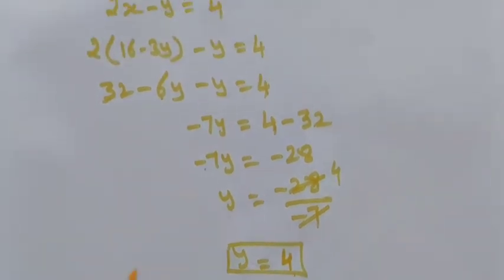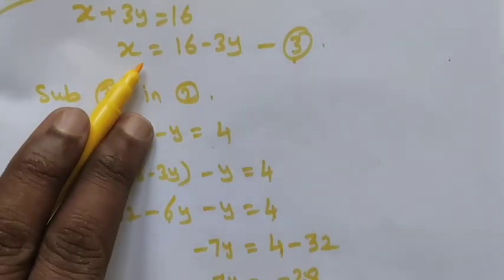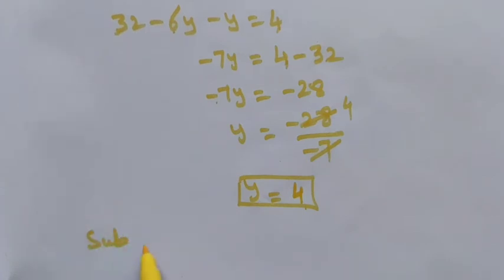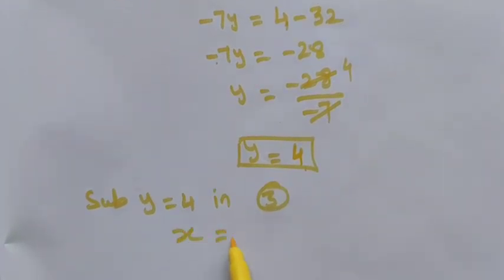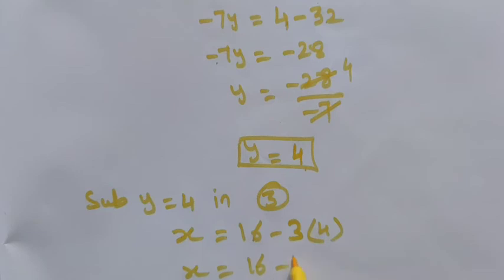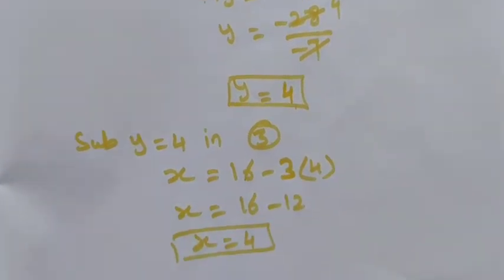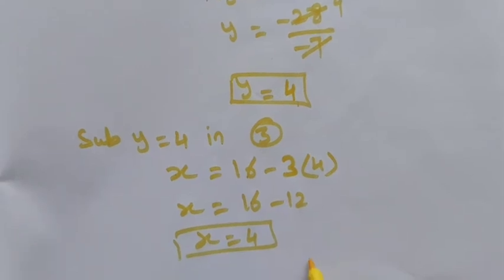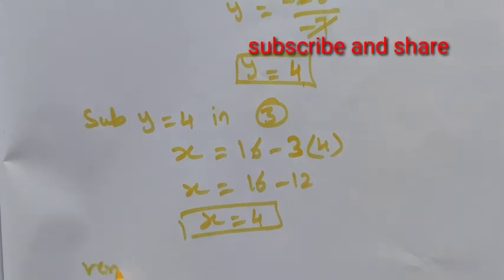Now that y is equal to 4, we can substitute in any one of the equations — equation 1, 2, or 3 — to find x. Here I am going to substitute in equation number three: x is equal to 16 minus 3 times y, that is 3 times 4. So x is equal to 16 minus 12, which gives x is equal to 4. The solution is x equals 4 and y equals 4.